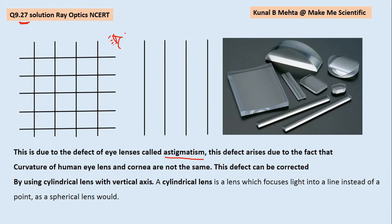then this astigmatic eye is only going to see the vertical or the horizontal wires. For example, this eye when it looks at this particular wire mesh, it observes only the vertical wires and it cannot observe the horizontal ones — those are not the visible ones. This defect is due to the fact that the curvature of the human eye cornea and the lens are not the same.